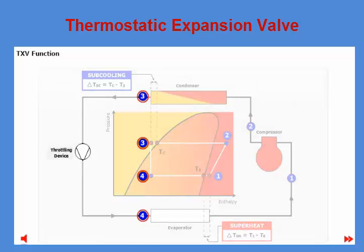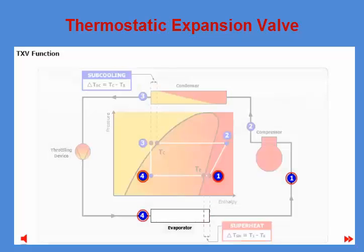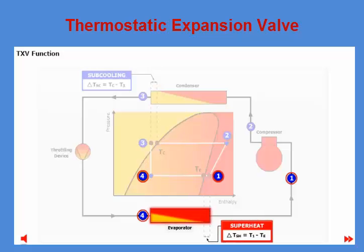Between points three and four, the liquid refrigerant expands because of the pressure drop in the throttling device, thereby dropping in both pressure and temperature. Refrigerant leaves the throttling device as a mixture of vapor and liquid at low pressure. Finally, between points four and one, the refrigerant is heated in the evaporator, evaporating the remaining liquid to vapor. Refrigerant leaves the evaporator as superheated vapor, and pressure is not changed in the evaporator.